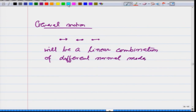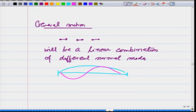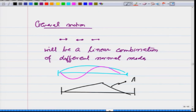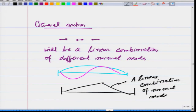Just like if I have a string, its normal modes are the vibrations of a given frequency like this. But if I give a general displacement to this string, let us say like this, this is a linear combination of normal modes. So, this is what we have covered so far.